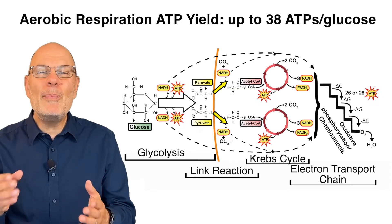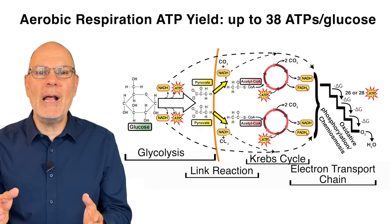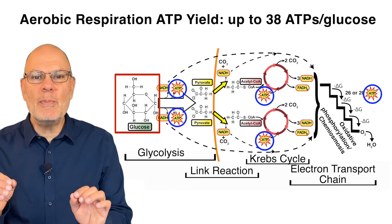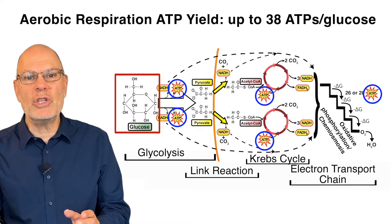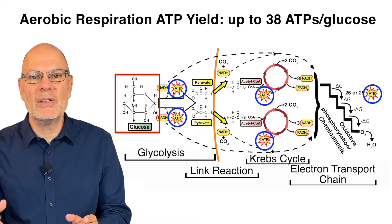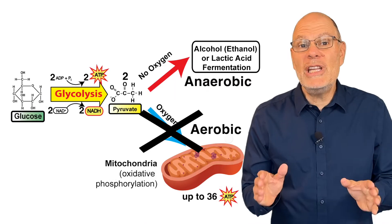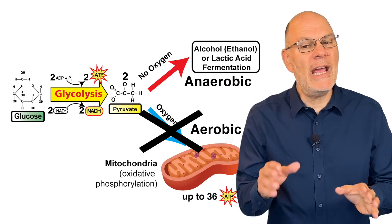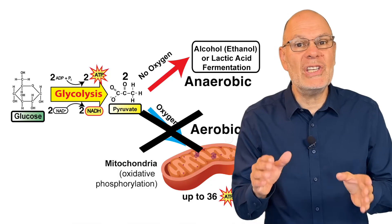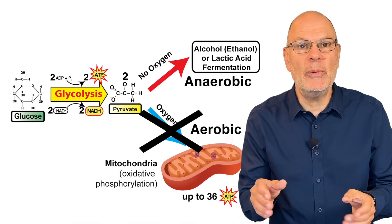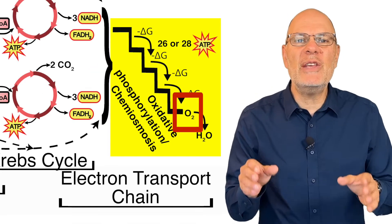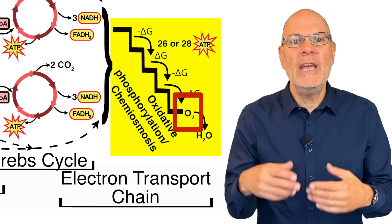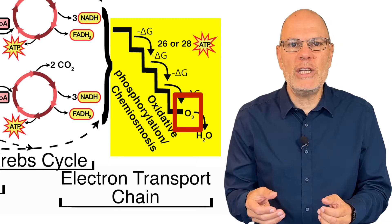The process creates up to 38 molecules of ATP for each molecule of glucose that starts the process. If oxygen isn't present, then all of the reactions that happen after glycolysis cannot continue, because oxygen is the final electron acceptor in the electron transport chain.